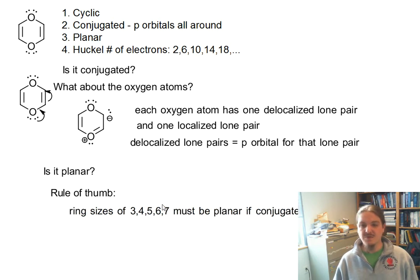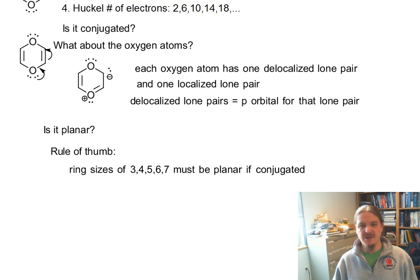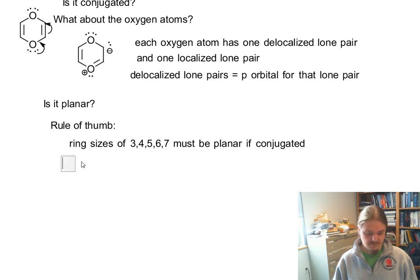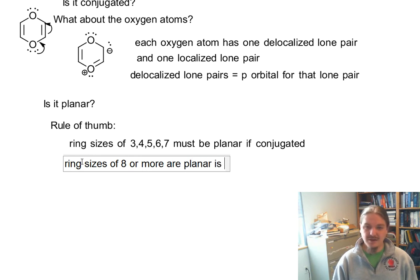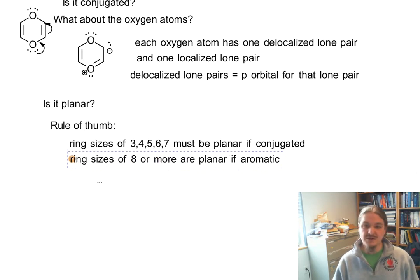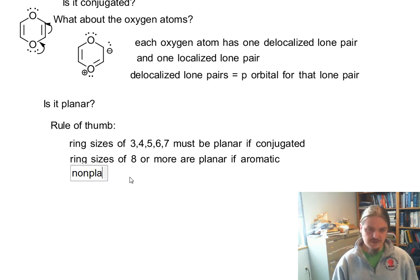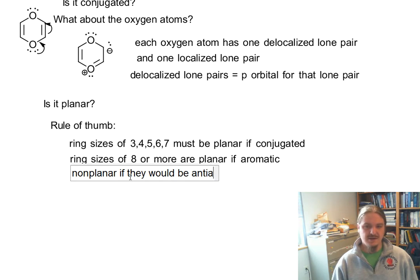If you have a ring size of 3, 4, 5, 6, and 7, they must be planar if conjugated. Ring sizes of 8 or more are planar if aromatic. So this is an important consideration, they are non-planar if not aromatic or non-planar if they would be anti-aromatic.